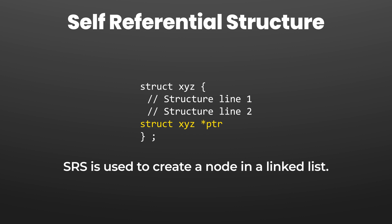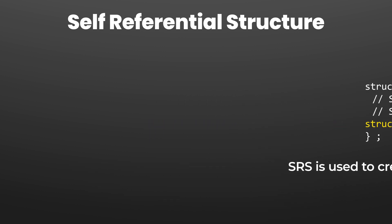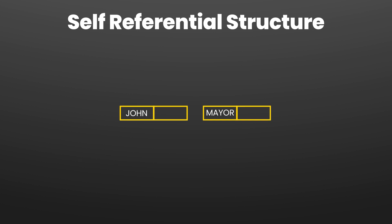A self-referential structure is used to create a node in the linked list. As programmers we want to write reusable code, so we define a structure that contains the records of our linked list in two cells: the first being the data, and the second being a pointer variable named link. This link node points to another node in the linked list, thus creating a self-referential structure.